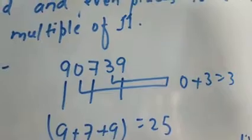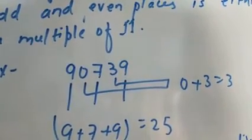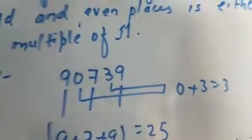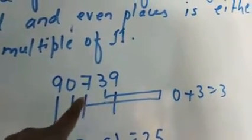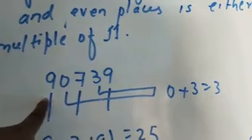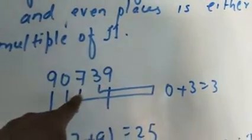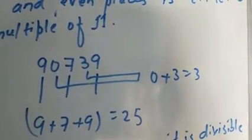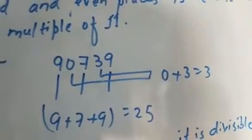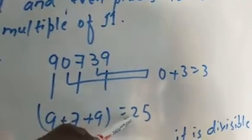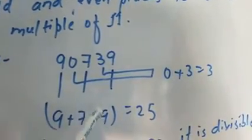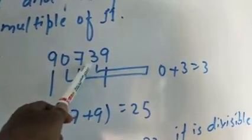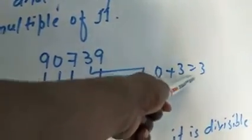For example, here is 90739. If we take 9 in the odd place, then 9, 7, and 9 are all in odd places. We will add these three odd places: 9+7+9, and the value will be 25. So odd place value is 25. Now we will add the even places. In even places we have 3 and 0. When we add these two, the value is 0+3=3.